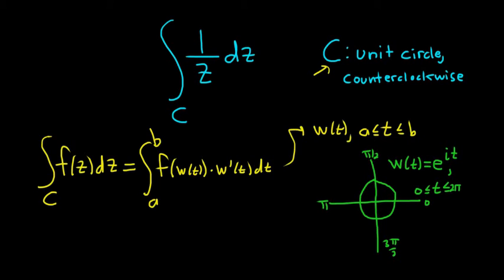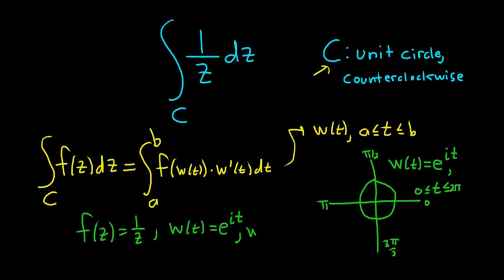Now we just have to work out this problem. Here f of z is equal to 1 over z, and w of t we said was e to the it. Now we just need the derivative, w prime of t. The derivative of e to the x is e to the x, so here it's e to the it times the derivative of the inside function. The inside function is it, its derivative is simply i — i is a constant, the derivative of t is 1. So w prime of t is i e to the it.